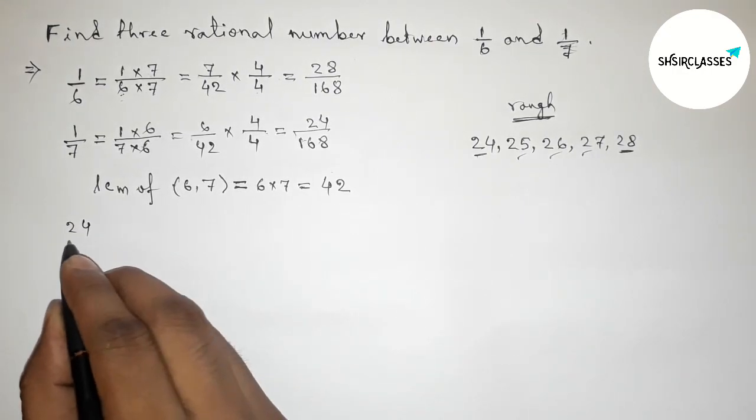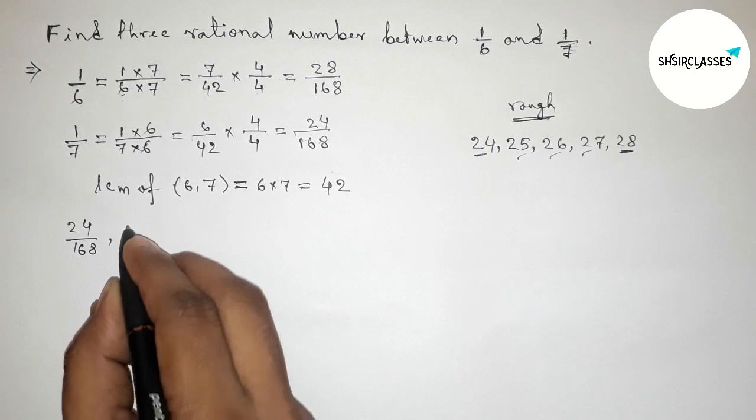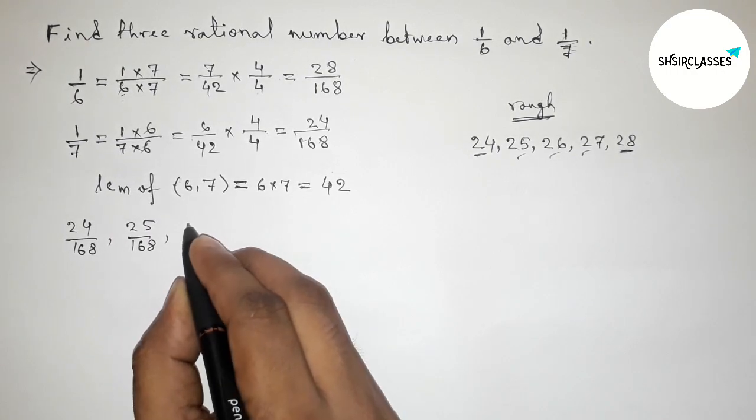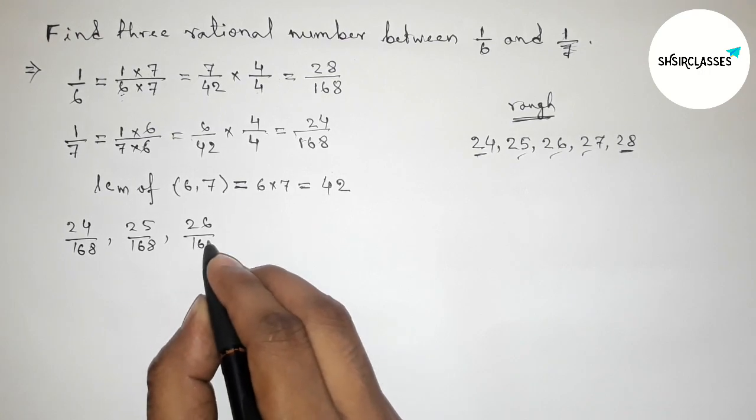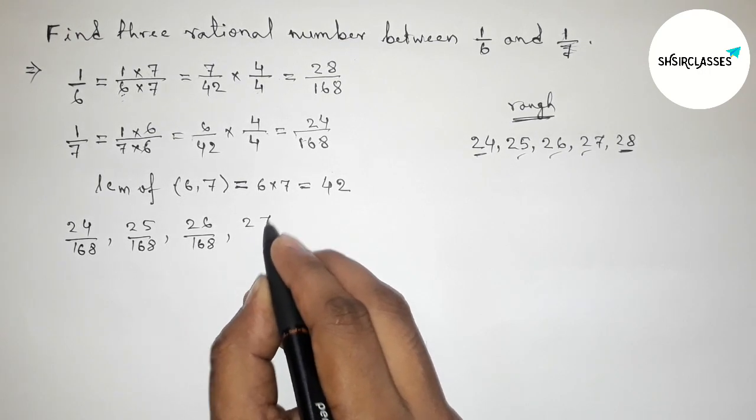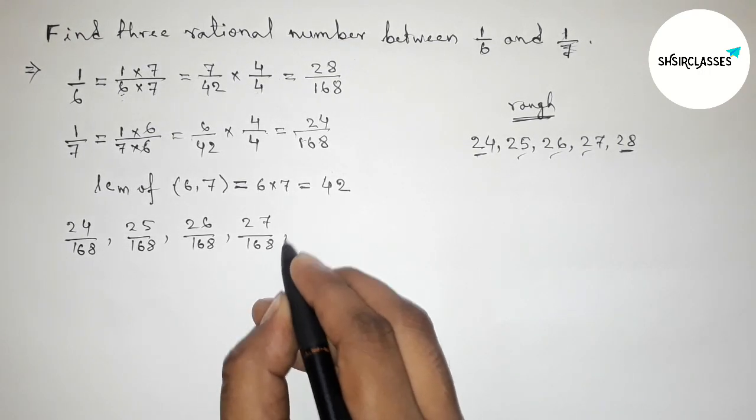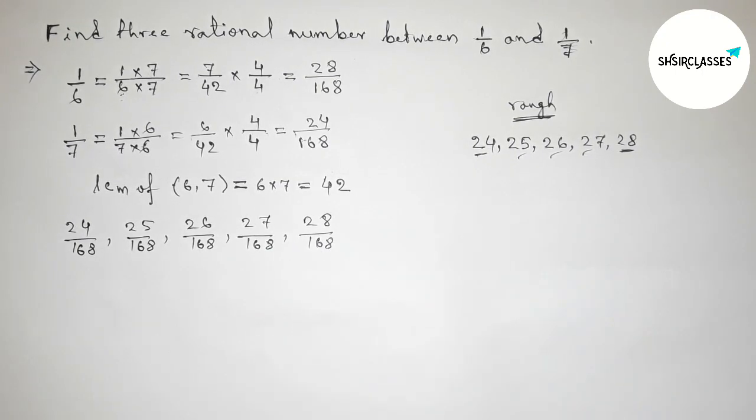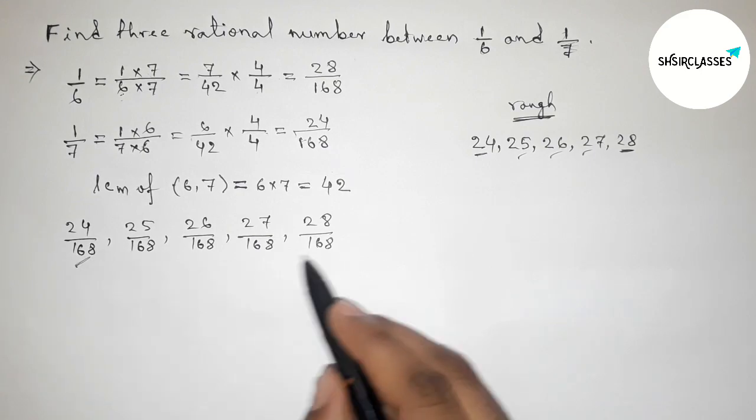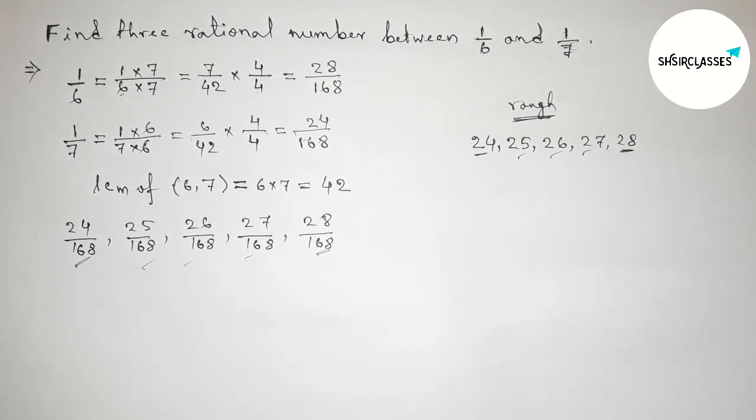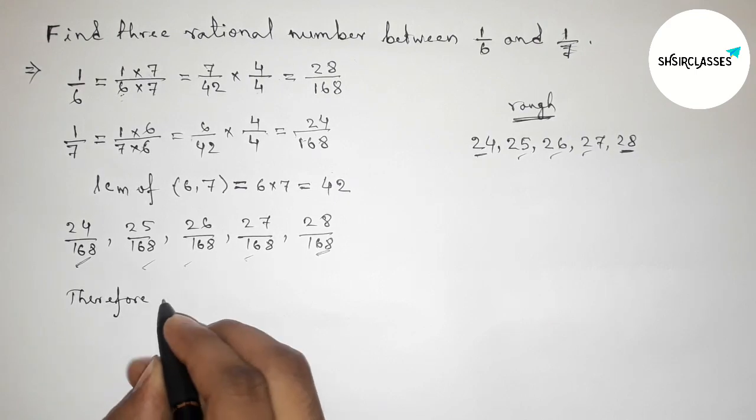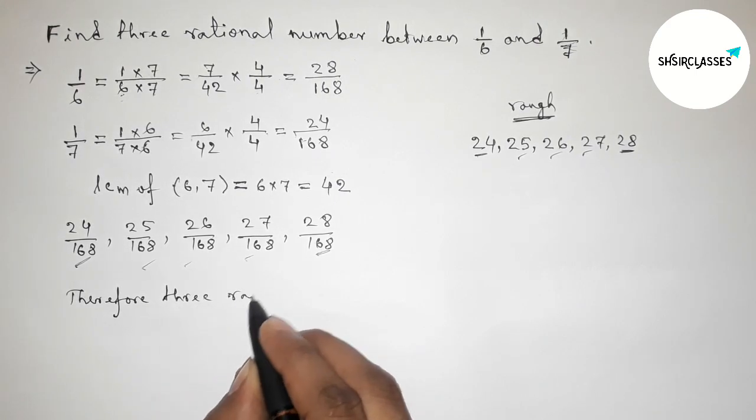First one is 24/168, then 25/168, 26/168, 27/168, and 28/168. So now between these are 3 required rational numbers. Therefore the 3 required rational numbers between 1/6 and 1/7 are: 25/168, then 26/168, then 27/168.